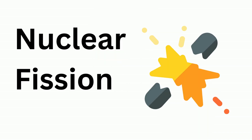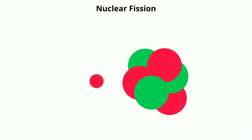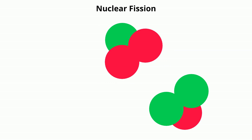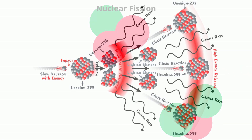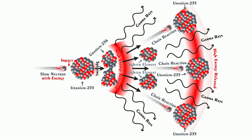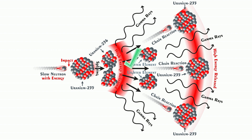Let's begin with nuclear fission. Nuclear fission is the splitting of a large atom like uranium-235 into smaller elements. A neutron strikes uranium-235, which then becomes a very unstable uranium-236, which quickly splits into lighter elements and gives off additional neutrons,